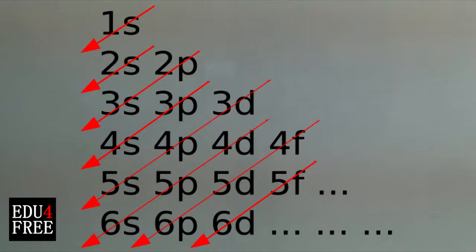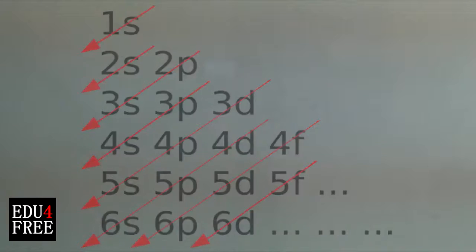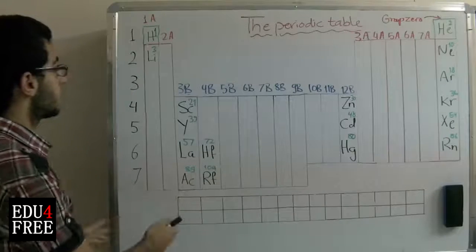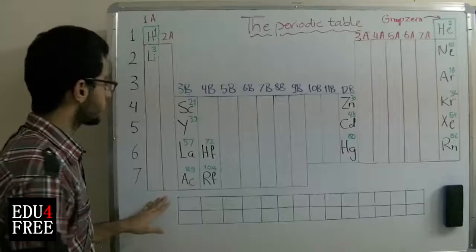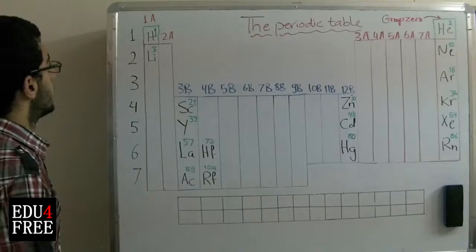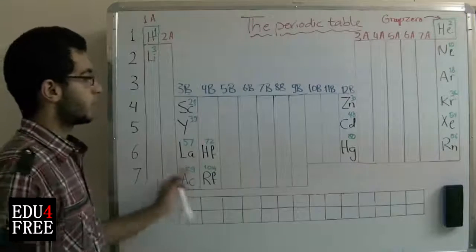These sublevels are arranged in sequence in a certain order, as we can see here. Take a deep look at that image before we proceed, because this plays a very important role in the classification of elements in the periodic table. Now let's see how we can figure out the classification of elements inside the periodic table. I tried to draw the periodic table on the board in order to make this easier to illustrate. This is the shape of the modern periodic table.